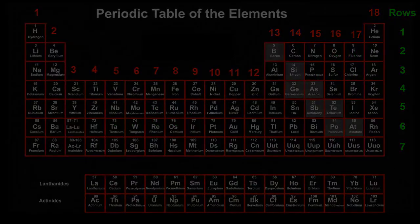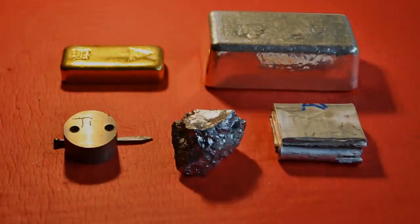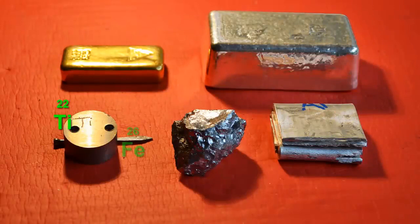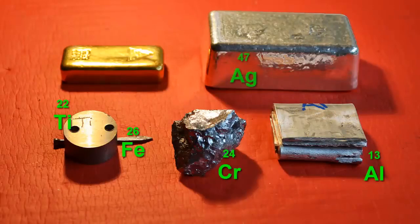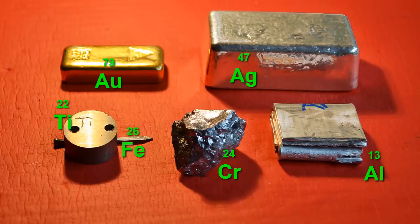What is a metal? Here's a few: titanium, iron, chromium, aluminum, silver, and gold, with the atomic numbers above the symbols.